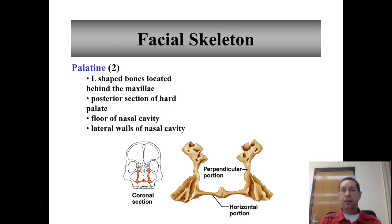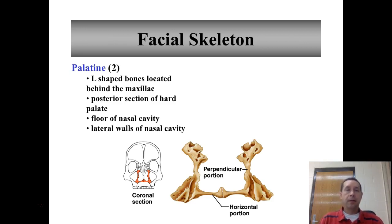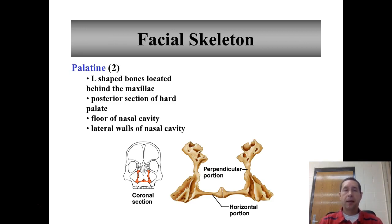Behind or posterior to the maxilla, you find the two palatine bones, which are L-shaped bones located behind the maxilla. They form the posterior section of the hard palate, or the roof of the mouth, the floor of the nasal cavity, and the lateral walls of the nasal cavity.